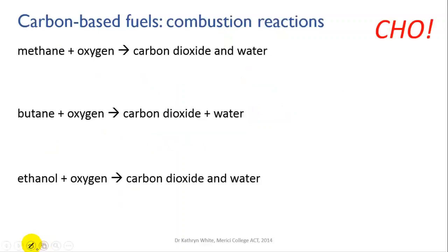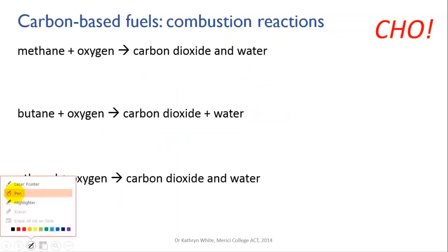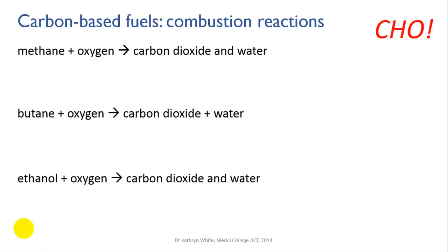I'm going to look specifically at balancing combustion reactions because they can occasionally throw up a few difficulties. As long as you follow this basic method you should always be okay. The method relies on the order of balancing, which you can remember as CHO: first balance the carbon, then balance the hydrogen, then balance the oxygen. This is specifically for combustion of carbon-based fuels.